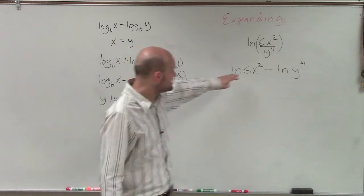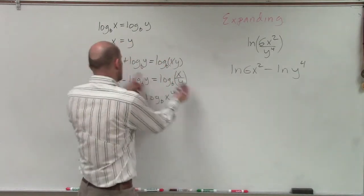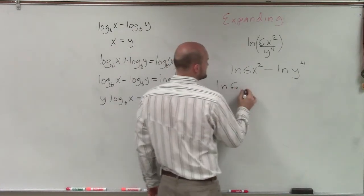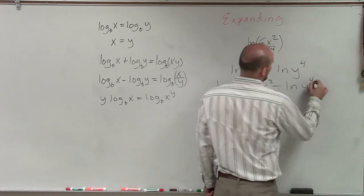Then what I notice is inside this logarithm, natural logarithm, I have another product. So I can break that apart by using the sum of two logarithms. So the ln of 6 plus ln of x squared minus the ln of y to the fourth.